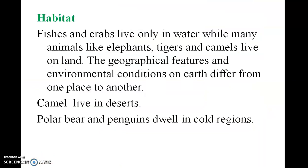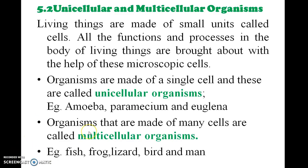Fishes and crabs live only in water, while many animals like elephant, tiger, and camel live on land. Camel lives in the desert, while polar bear and penguin live in cold regions. Now let us look at unicellular and multicellular organisms.